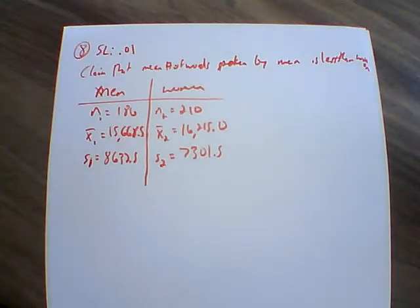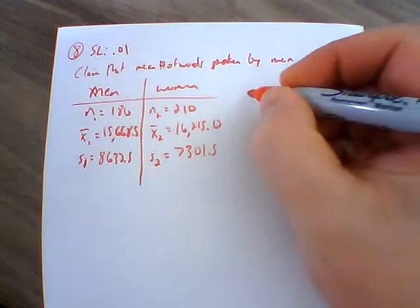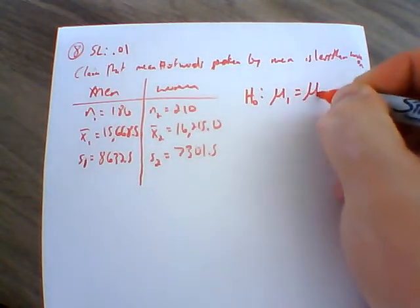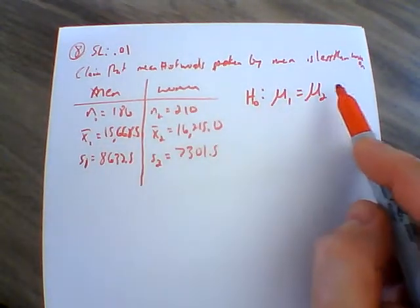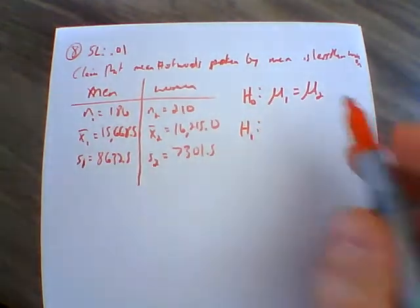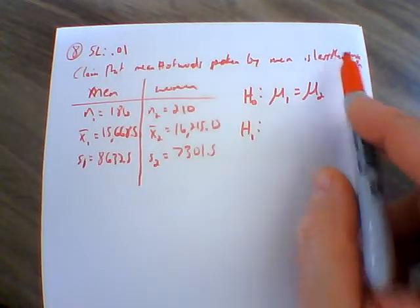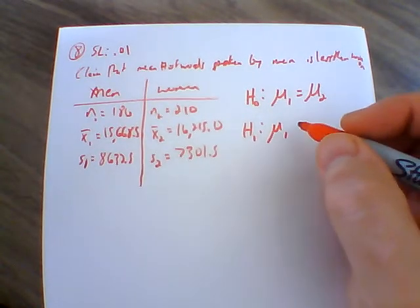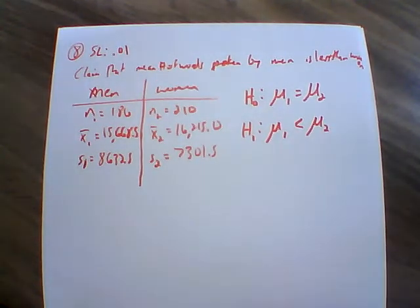We have to think about this as just a regular comparing of means. Our null hypothesis is that the mean of men equals the mean of women. Our null hypothesis is not our claim, so our claim has to be part of our alternative hypothesis. So our alternative hypothesis is: is the mean of men less than the mean of women?